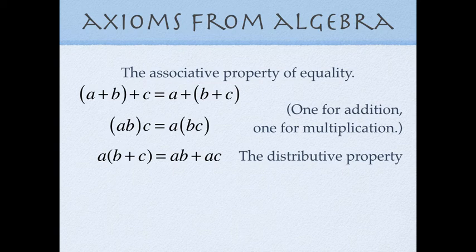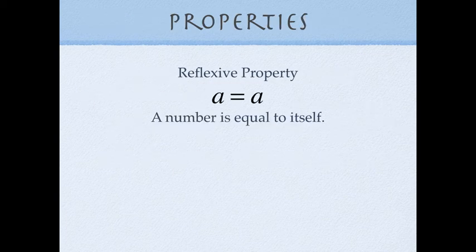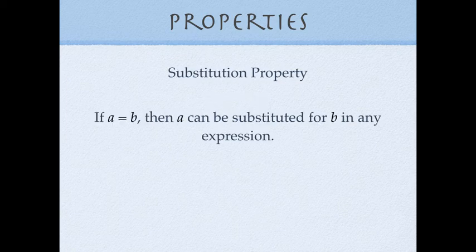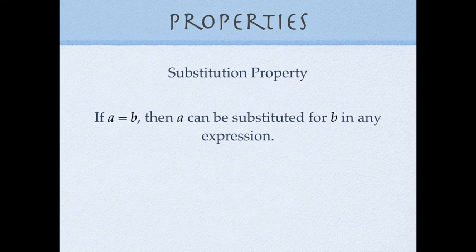In geometry we have many of the same things. We have the reflexive property — a number is equal to itself — and also the substitution property: if a is equal to b, then a can be substituted for b in any expression. You've used this before, for example when solving by substitution in linear systems of equations, isolating x or y in one equation and substituting it into the other. If two things are the same, you can write a instead of b or b instead of a.